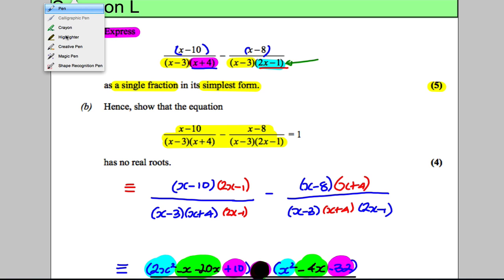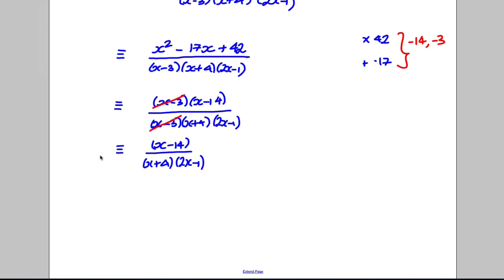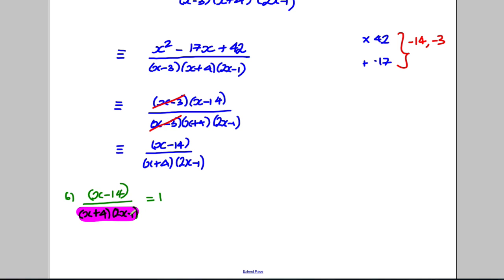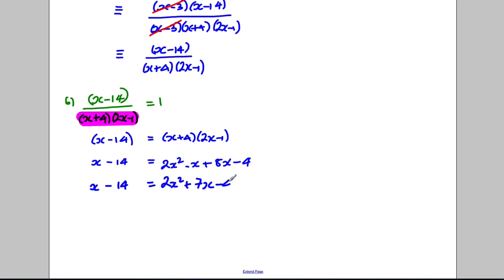For part B, using the result from part A, we solve (x − 14) / [(x + 4)(2x − 1)] = 1. Multiplying both sides by (x + 4)(2x − 1) gives x − 14 = (x + 4)(2x − 1). Expanding the right side: 2x² − x + 8x − 4, so x − 14 = 2x² + 7x − 4. This is a quadratic.